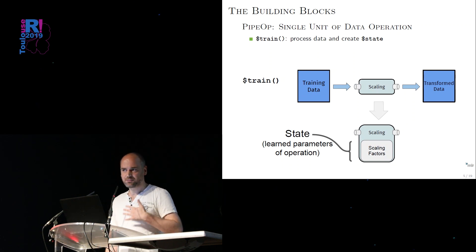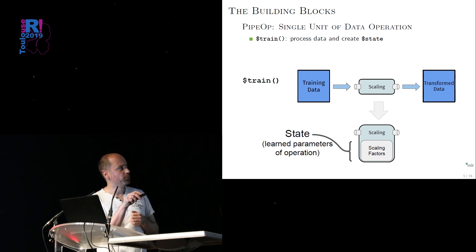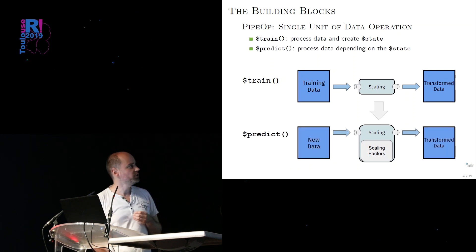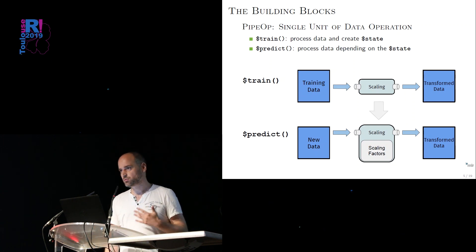But because you kind of have to learn stuff during training and then apply this during prediction, there's two routes of operation. The training route, data goes in, you perform the operation, you transform the data, and data comes out. But while you're doing this, you're also learning something about this. So you get basically learned parameters, that's what we call the state of the pipe op, and that's stored inside of the pipe op. And during prediction, you just apply that, new data goes in, you now don't learn anything, you just apply your learned parameters. And in this instance, rescale your data with the learned scaling factors, and data comes out. And this is the abstract structure behind any operation that we perform.